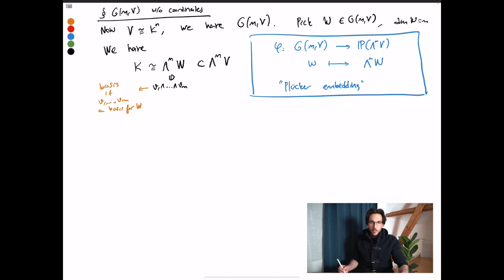Now we can define the Plücker map by just taking W and sending it to the line generated by wedge m inside of wedge m of V. We can define the map from the Grassmannian into the projective space. You'll see that the dimension of the receiving space matches the n choose m minus 1. So it really looks at least at first sight like the map that we have just described. It's an exercise to show that if you had coordinates on V, then this map that I just described corresponds to computing the minors.